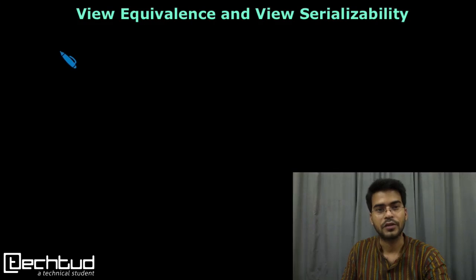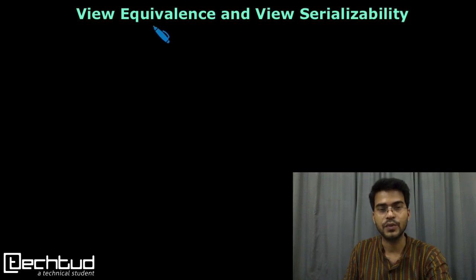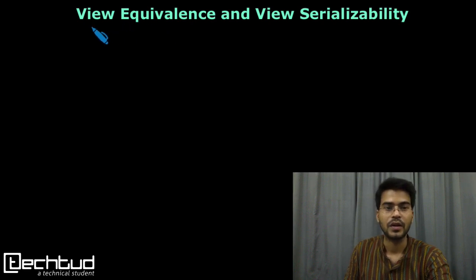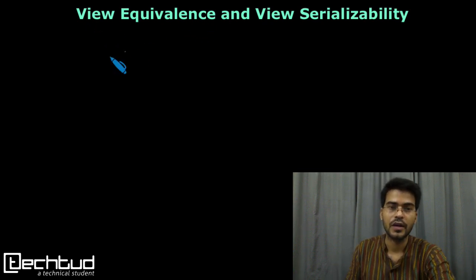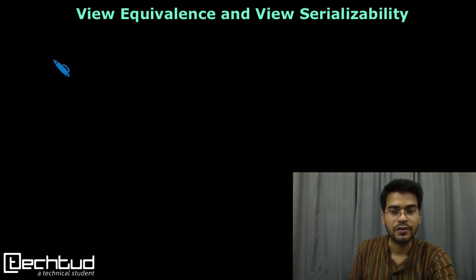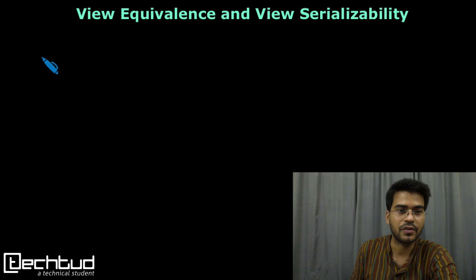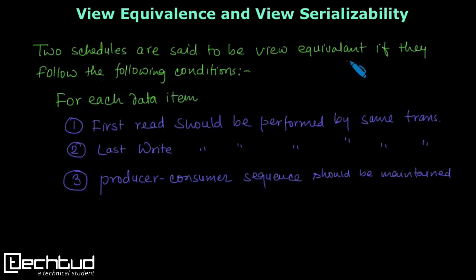Welcome to tecto.com. In this lecture we will start understanding what is view equivalence and view serializability. We have already understood what is result equivalence and conflict equivalence. Now we will understand what is view equivalence. Two schedules are said to be view equivalent when they follow certain conditions.